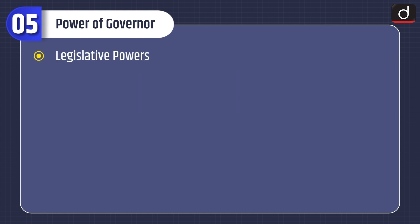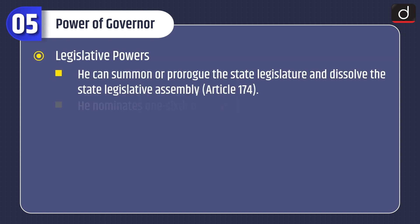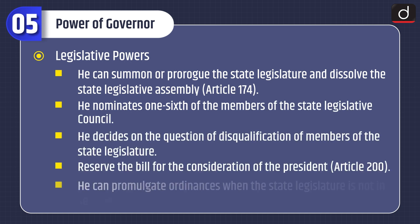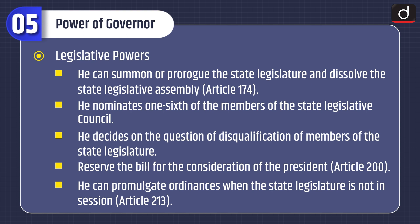Under legislative powers, he can summon, prorogue the state legislature and dissolve the state legislative assembly under Article 174. He nominates one-sixth of the members of the state legislative council. He decides on the question of disqualification of members of the state legislature. He can reserve a bill for the consideration of the president under Article 200, and he can promulgate ordinances when the state legislature is not in session under Article 213.